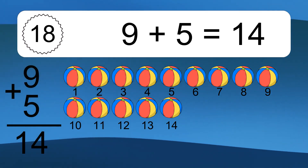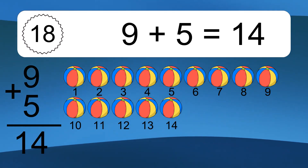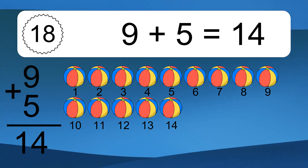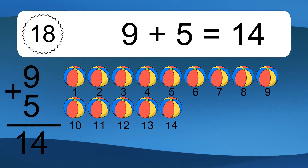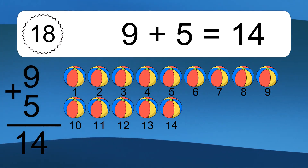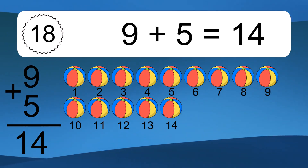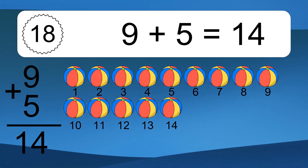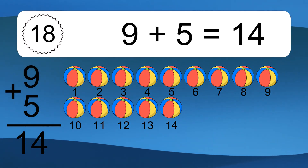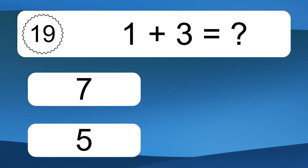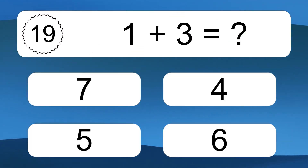9 plus 5 equals what? 9 plus 5 equals 14. Let's count it: 1, 2, 3, 4, 5, 6, 7, 8, 9, 10, 11, 12, 13, 14.